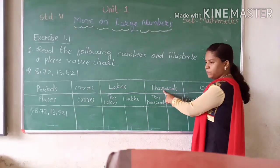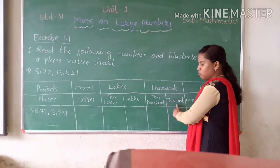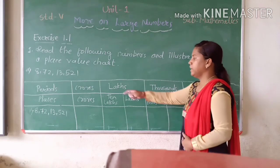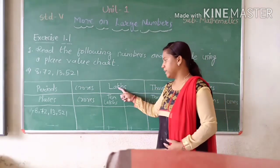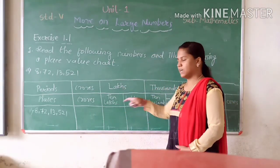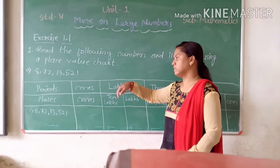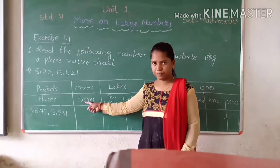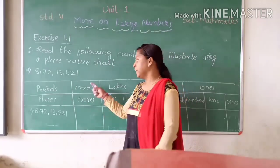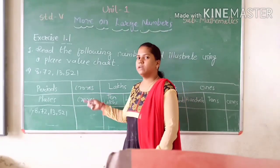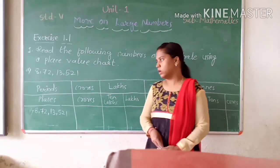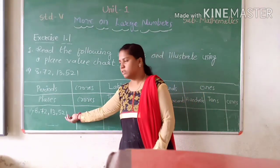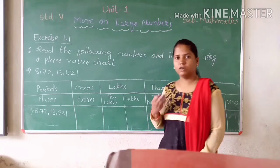In the thousands period, 2 columns become 1,000 and 10,000. In the lakh period, 2 columns become lakhs and 10 lakhs. In the crore period, crore will come. So now let's distribute this number in the place value chart.